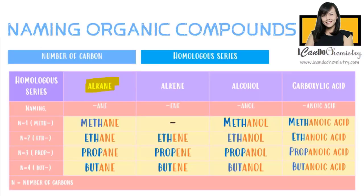Previously, we talked about how to name members in different homologous series. For the alkane homologous series, the first member which has one carbon is methane. The second member has two carbons and we call it ethane. The third member has three carbons, it is called propane. The fourth member has four carbons, it is butane.